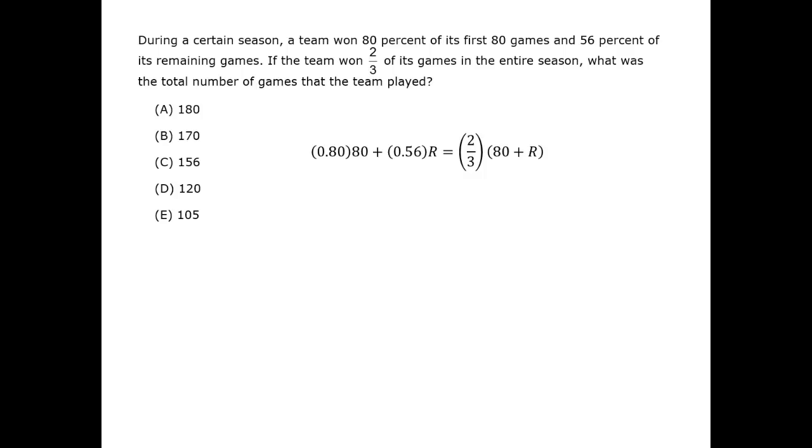Since that distance is about 0.13, and since the distance from 0.67, the final average, to 0.56, the average for the r games, is about 0.11, r must be greater than 80.